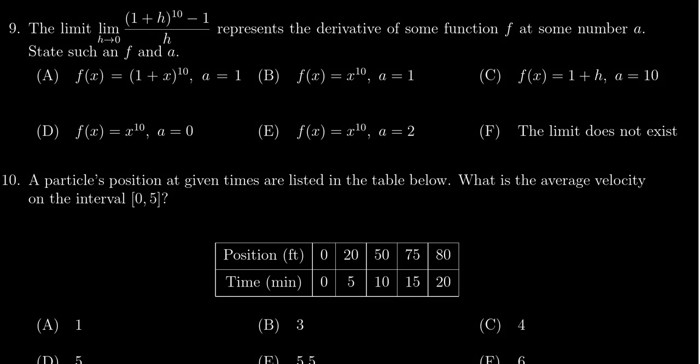In this video, we will present the solution to question number nine for practice exam number two for math 1210. We are given the limit as h approaches zero of (1 + h) to the 10th minus 1 over h, and we're told that it represents the derivative of some function f at some number a. We're supposed to identify what the function f and the number a must be.